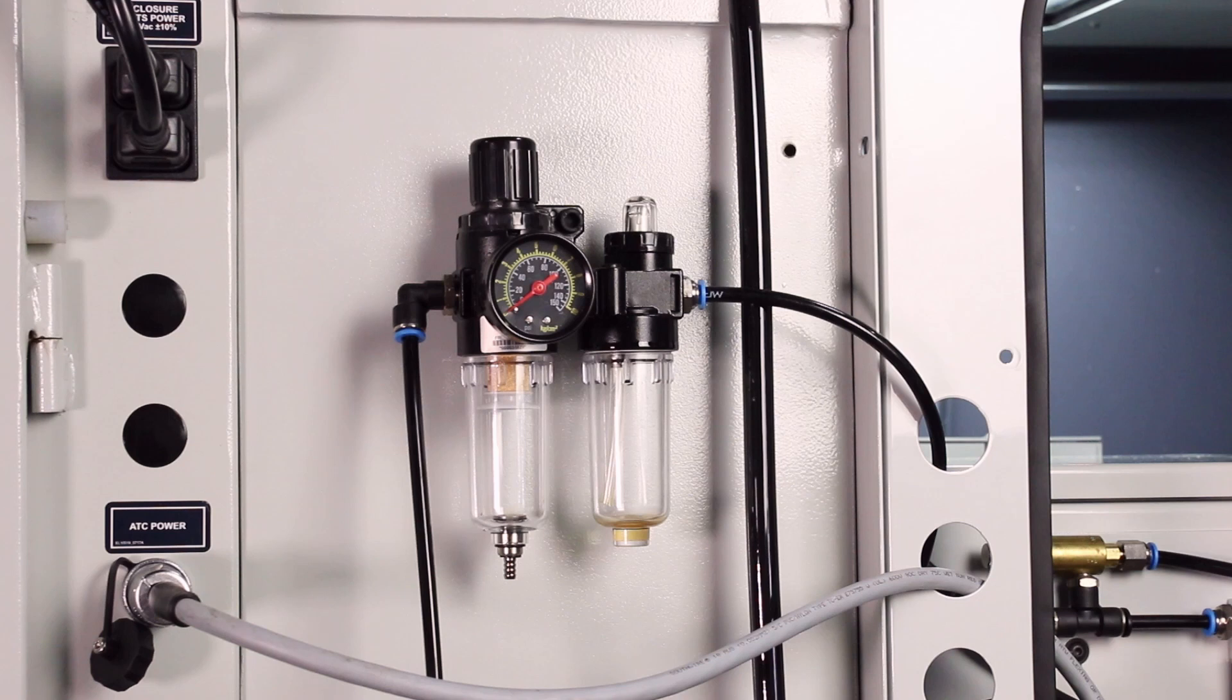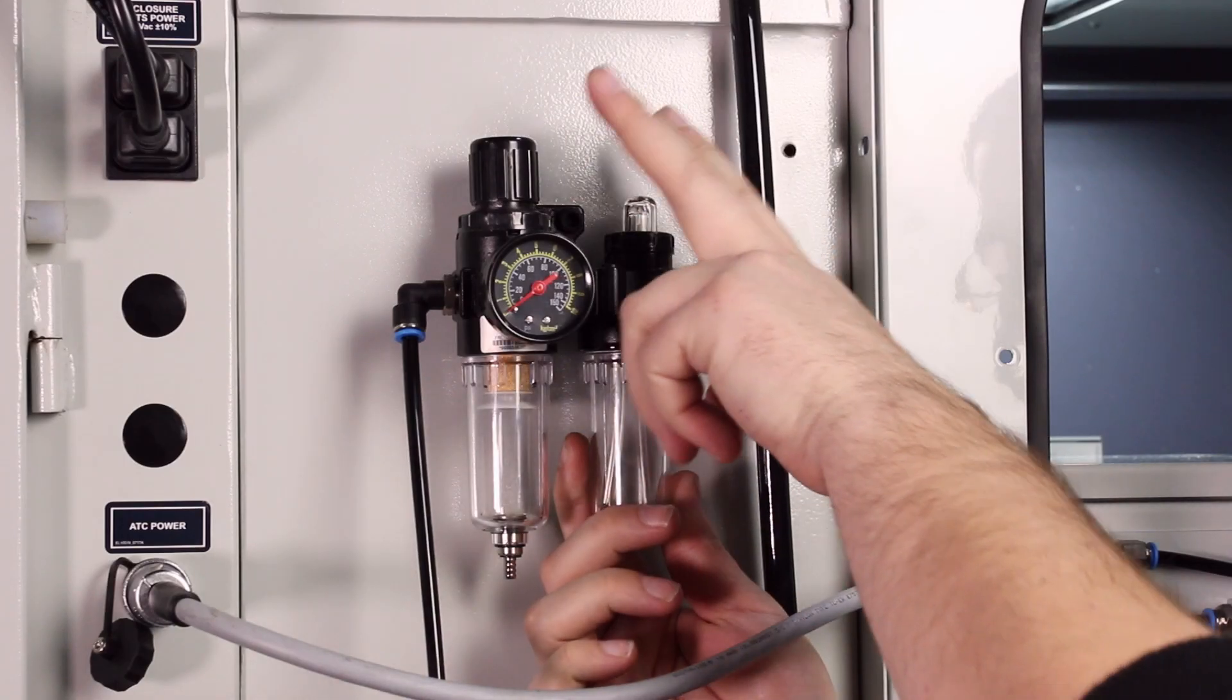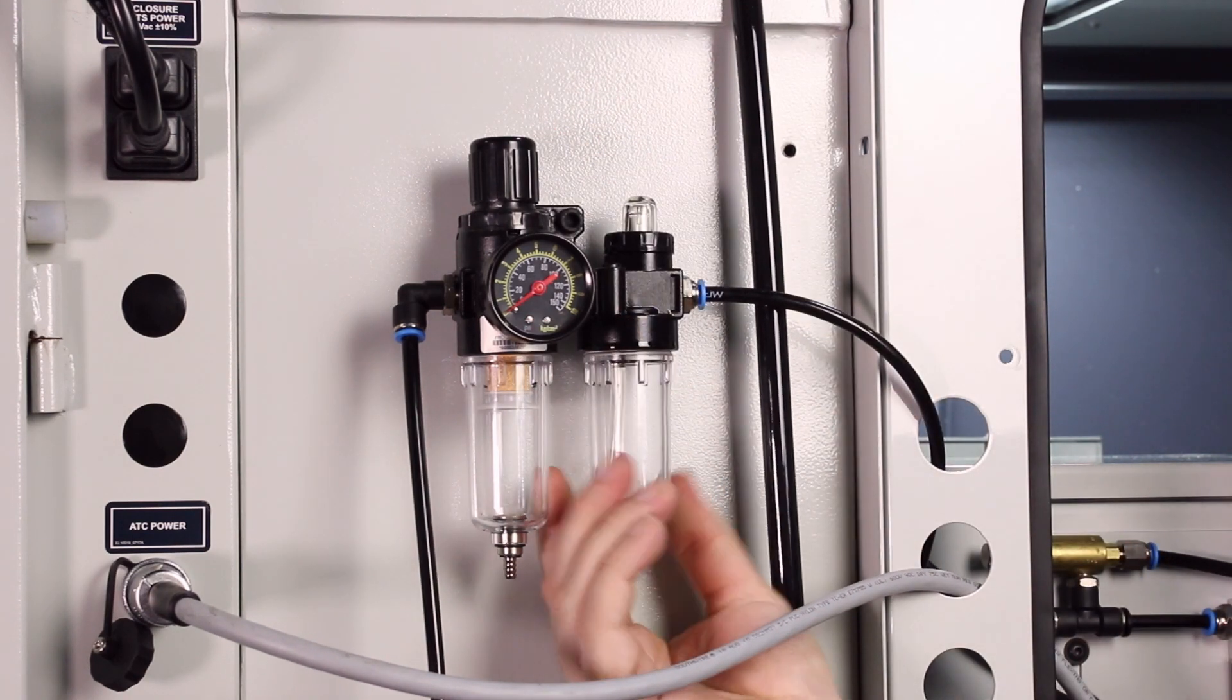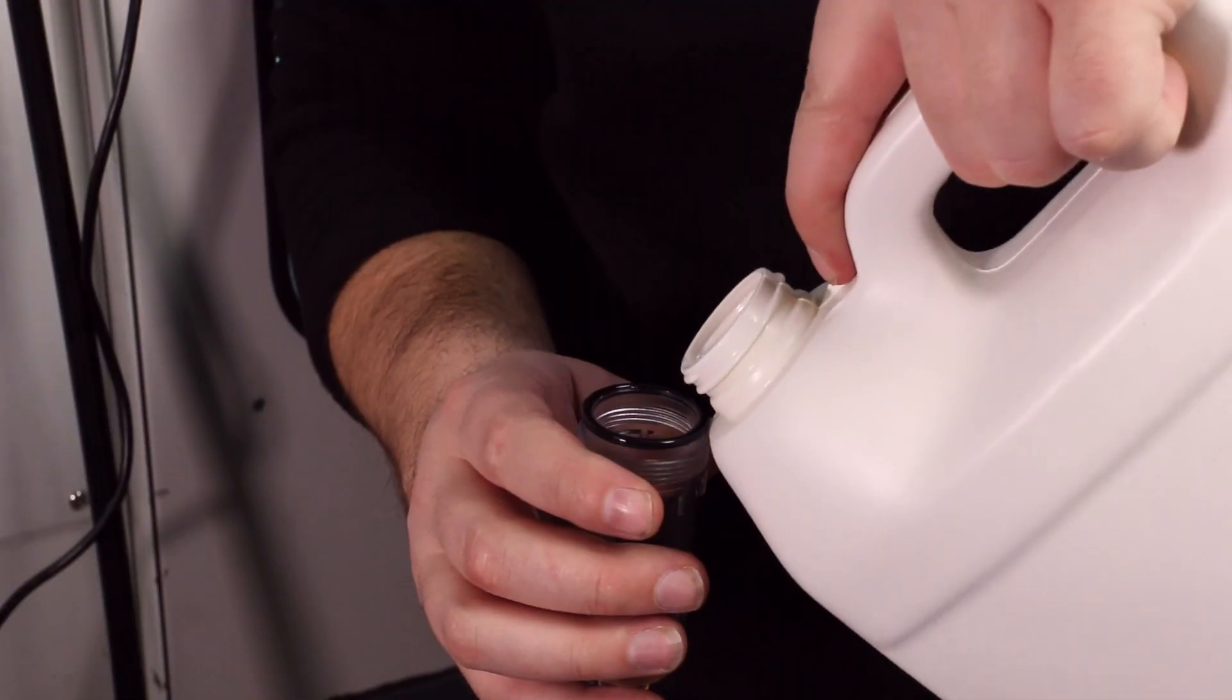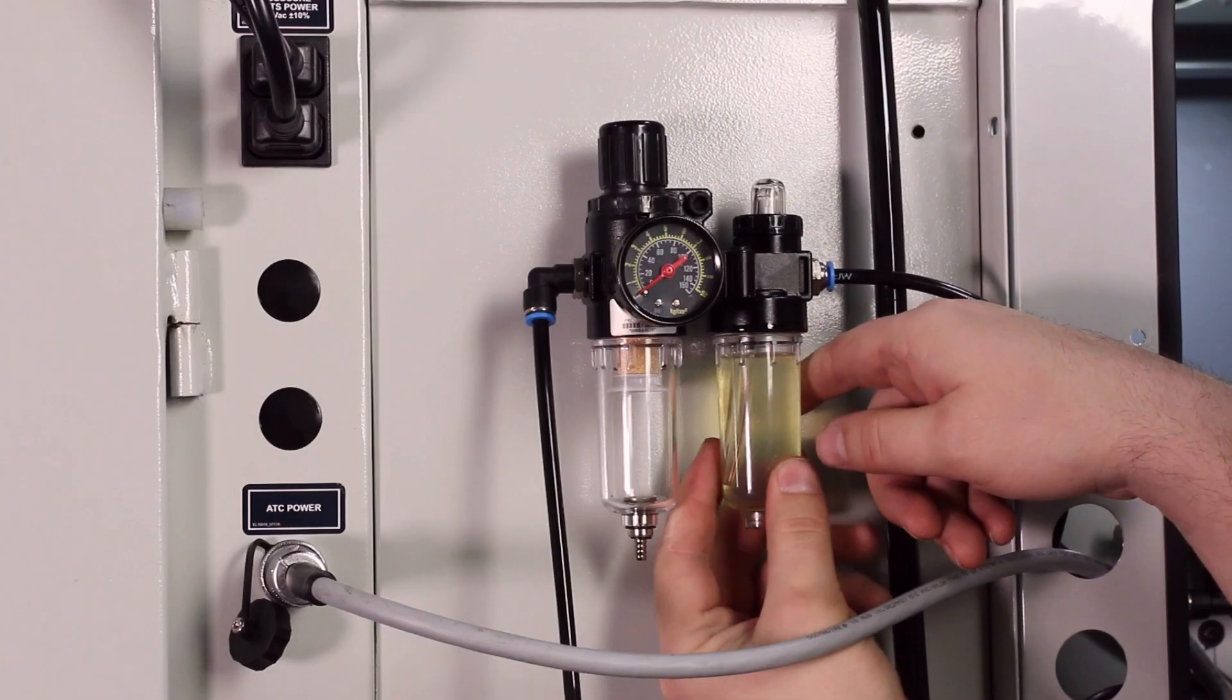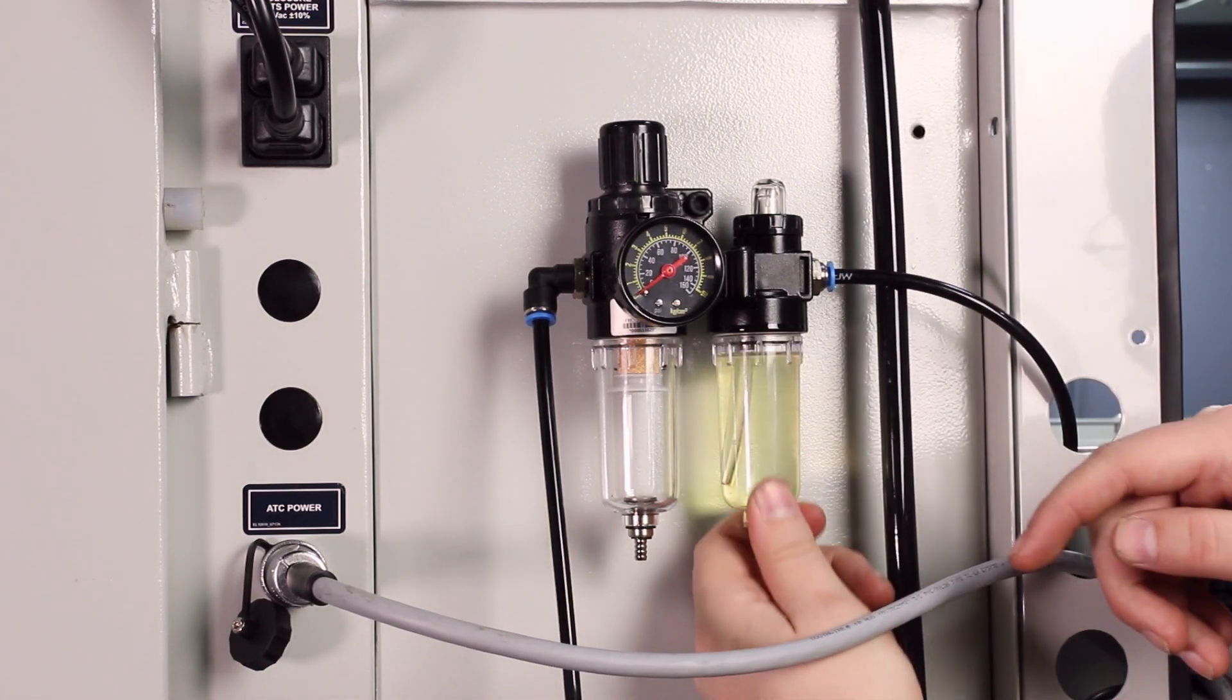On the rear filter regulator lubricator or FRL, for the initial fill of air tool oil, you need to turn off the air or shut the pressure knob so that the gauge reads zero. Then you can unscrew the bottom right container. Fill the container about two-thirds to three-quarters full of air tool oil and screw it back into place. Finger tight is good, otherwise it can crack.